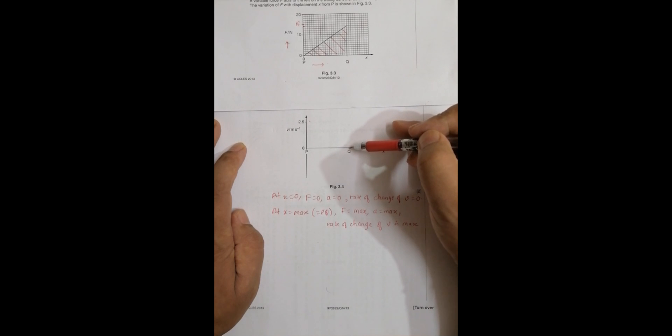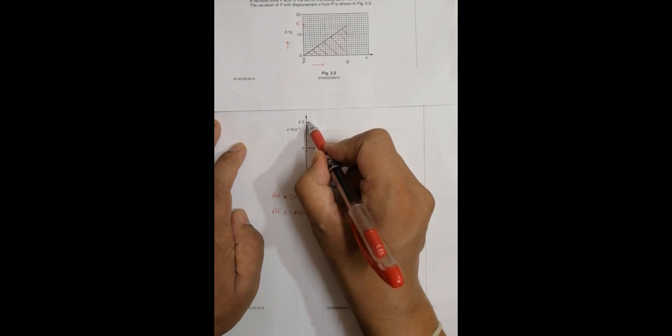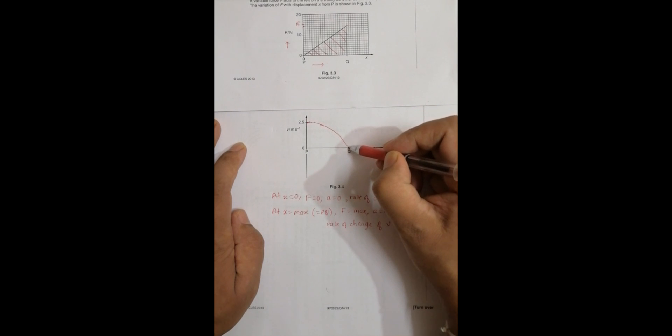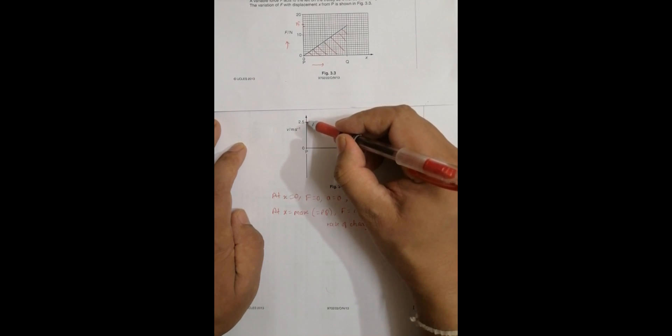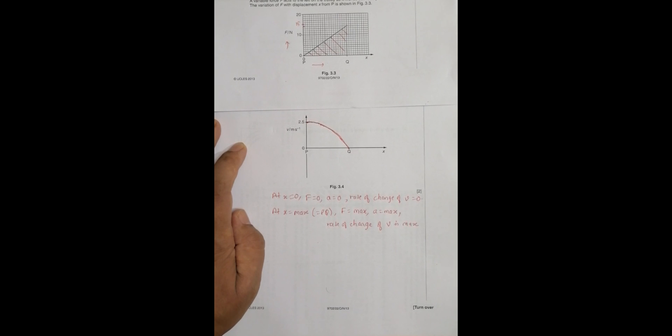So here zero rate of change means constant or the graph is horizontal. And here the rate of change is high, which means it has to have more slope. So the graph should be somewhat like this: it goes horizontally here, and from here it comes like this. So the slope should increase like this. This is the true nature of the graph.